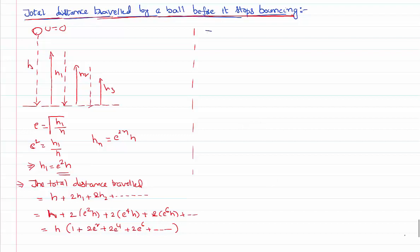That implies the total distance traveled is h of 1 plus, in all the remaining terms let us take 2 e square common: 1 plus e square plus e power 4 plus e power 6 and so on.